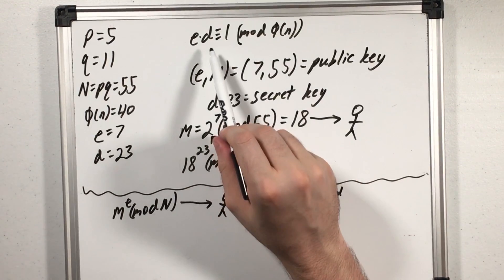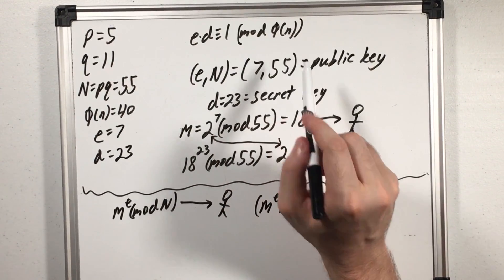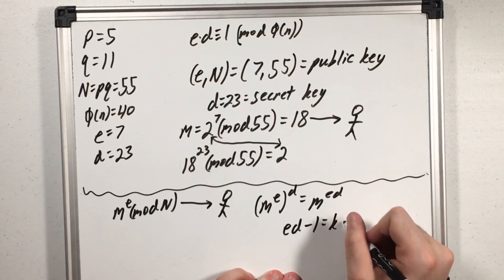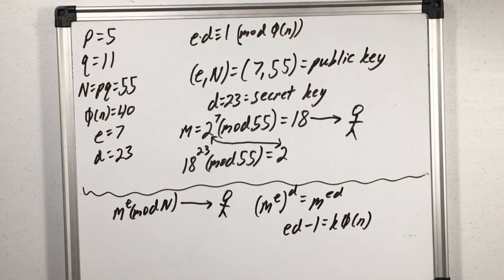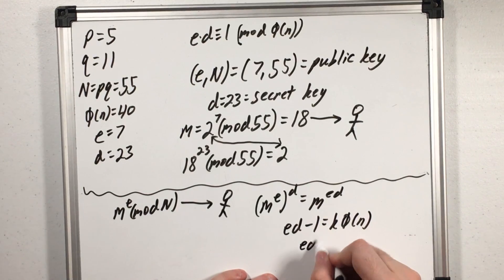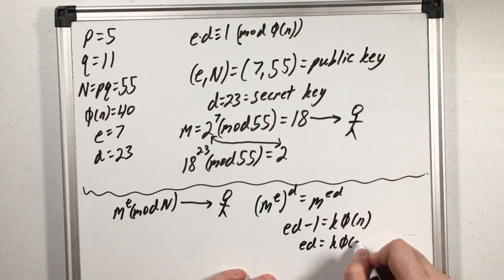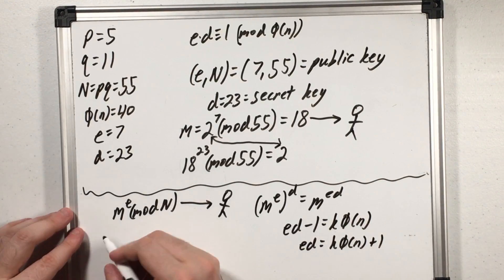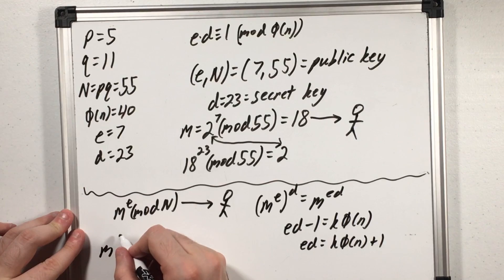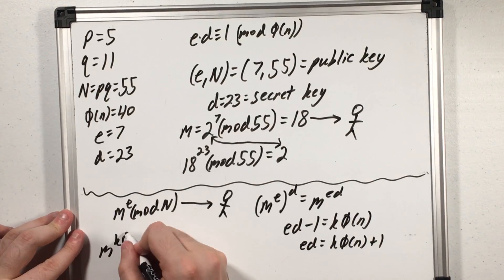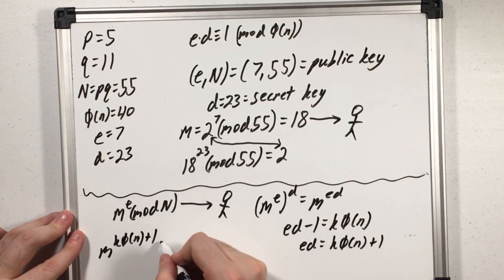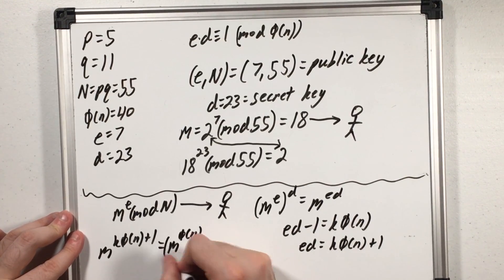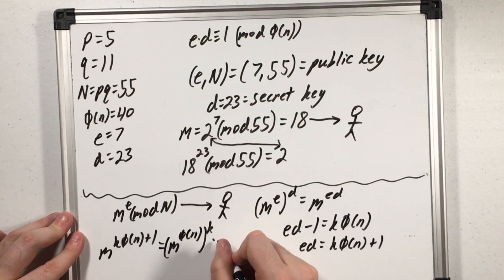Now remember ed is congruent to 1 mod phi of n which means that ed minus 1 is divisible by phi of n. Then I can rearrange this and get ed equals k phi of n plus 1. If I plug this into the exponent I get m to the k phi of n plus 1 and using rules of exponents I can write this as m to the phi of n to the k times m.